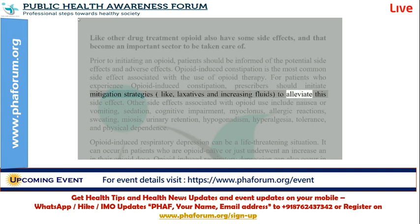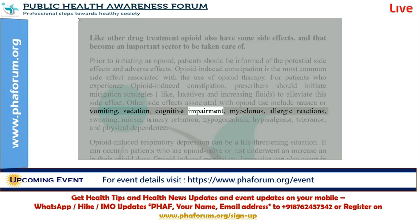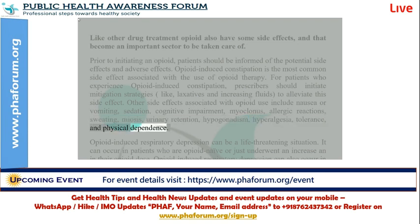Other side effects associated with opioid use include nausea or vomiting, sedation, cognitive impairment, myoclonus, allergic reactions, sweating, miosis, urinary retention, hypogonadism, hyperalgesia, tolerance, and physical dependence.